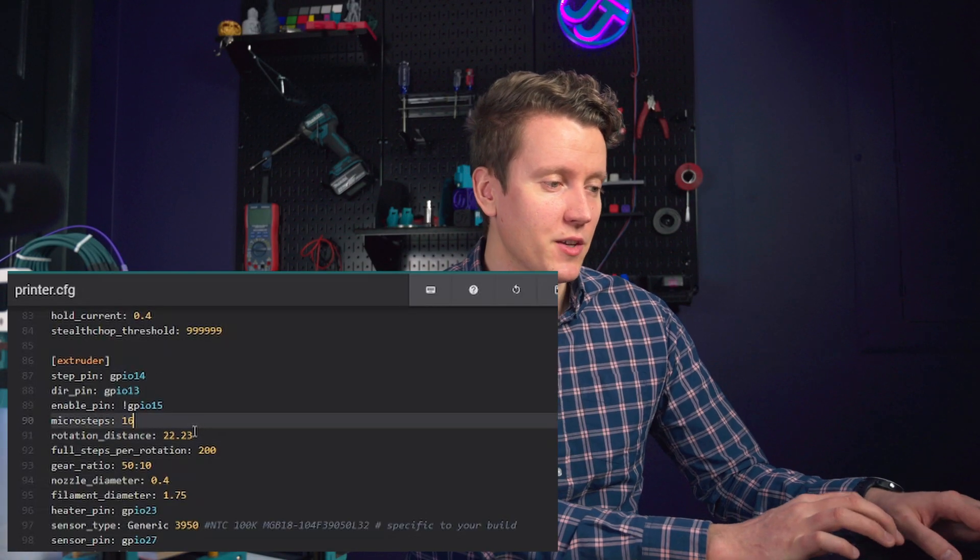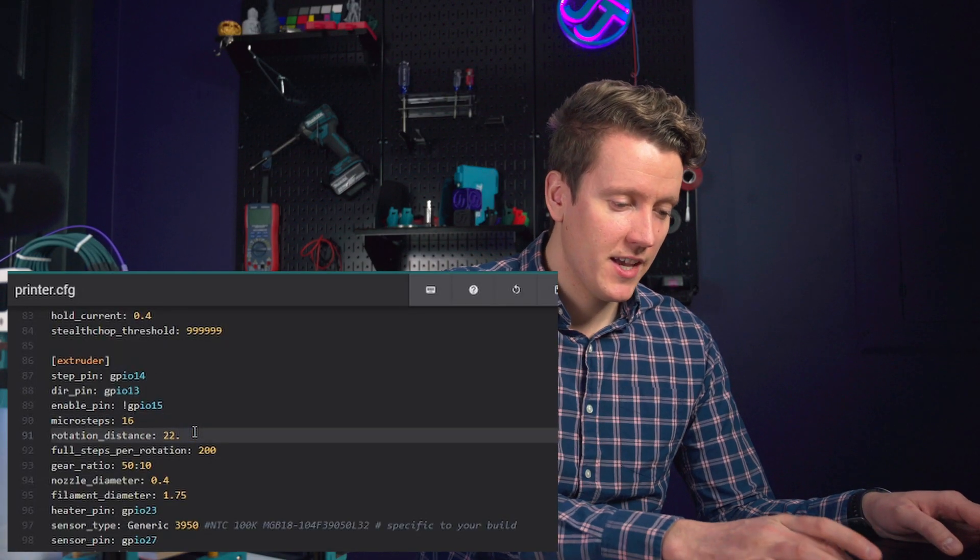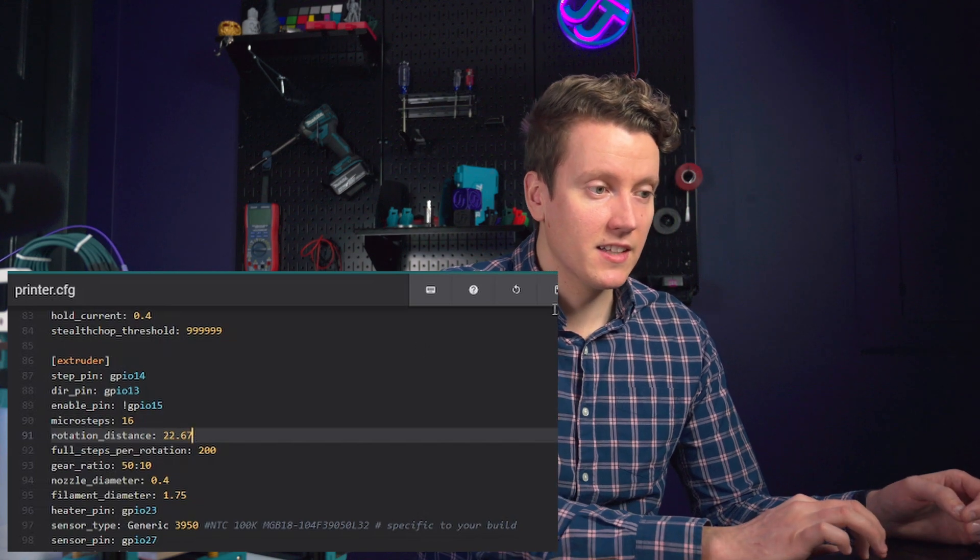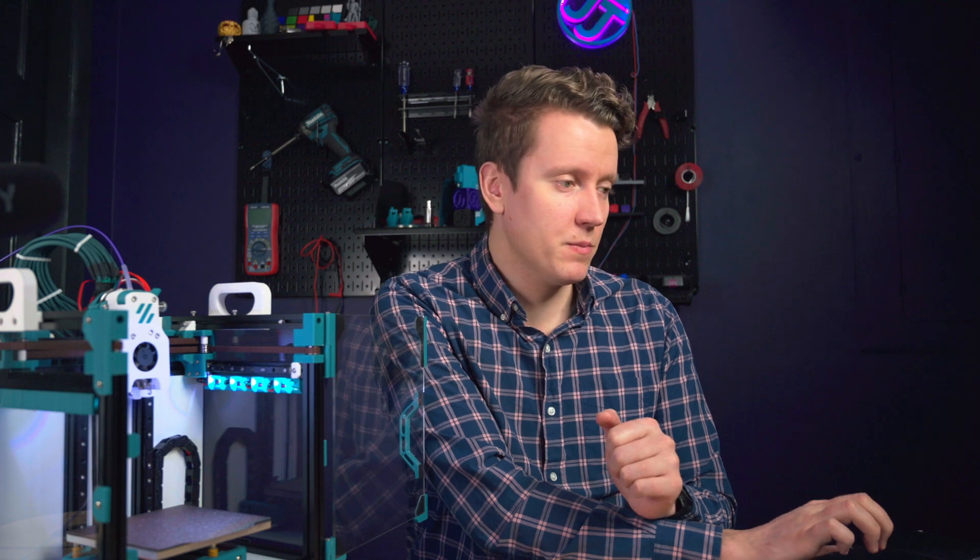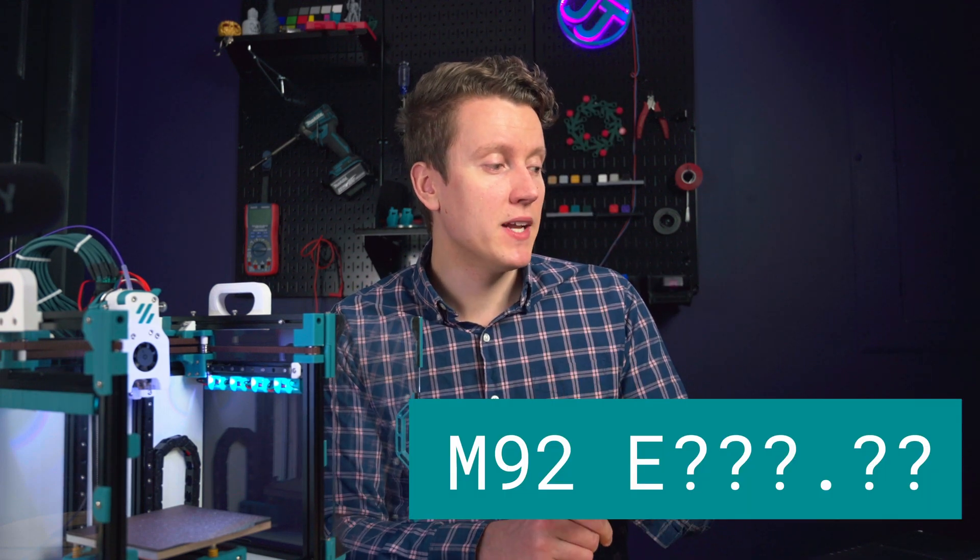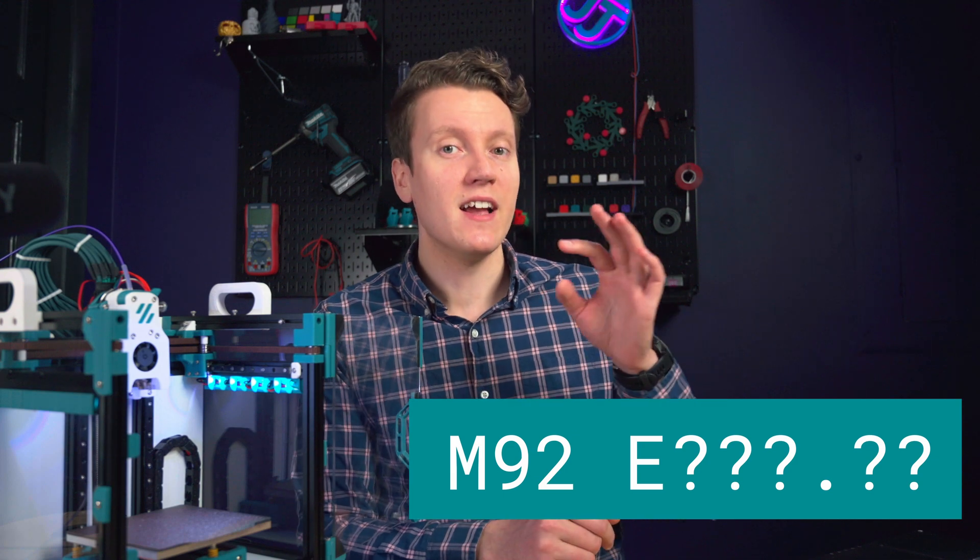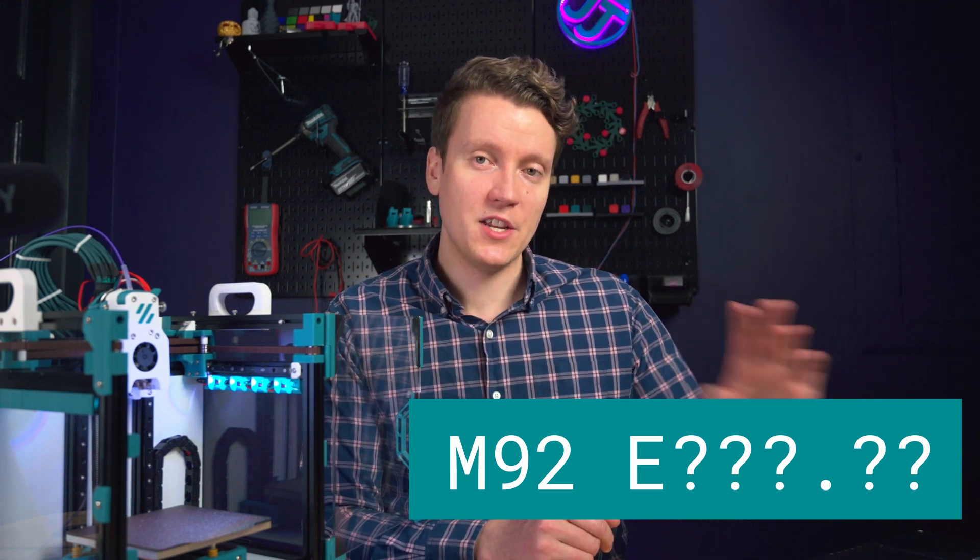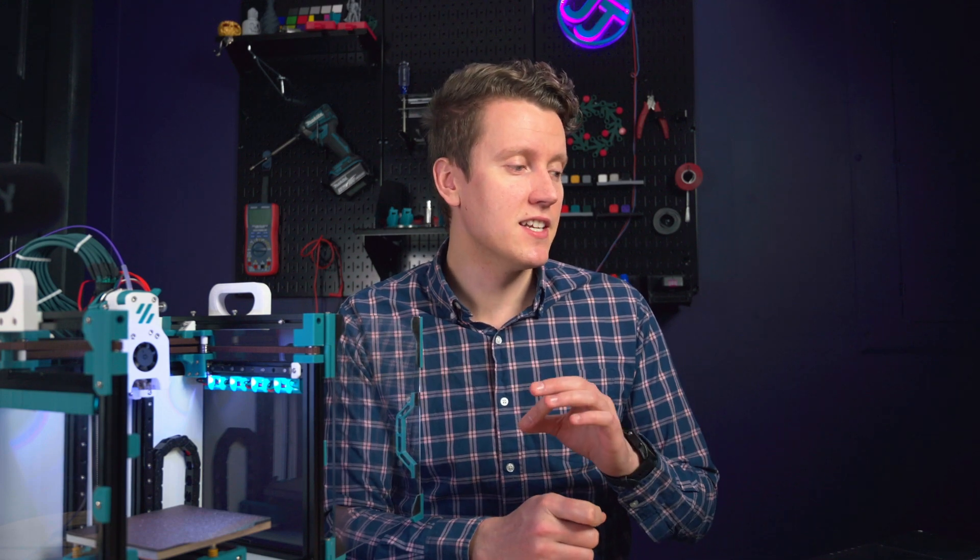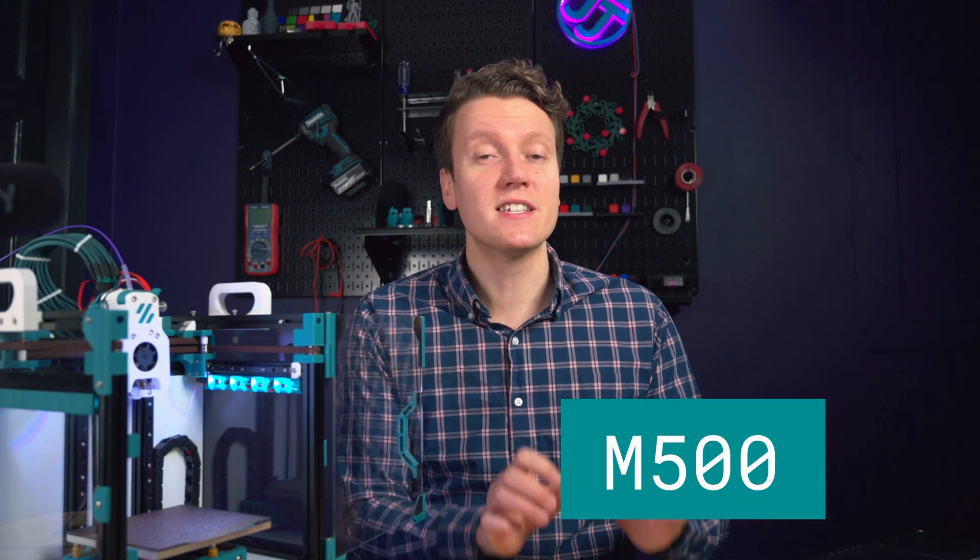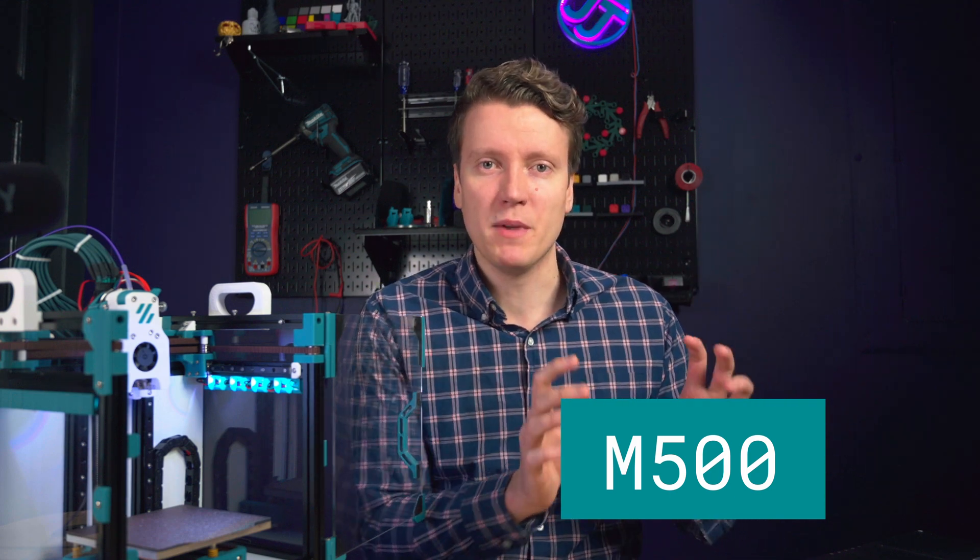So for Klipper, you can just plug in the value right here as your new setting, then click save and restart. That reboots the firmware with our new value. But in Marlin, the command to load in your new value is M92, put a space, and then E, and your new number. Hit enter to send that command, and then send command M500 to save your new settings to commit it to memory.